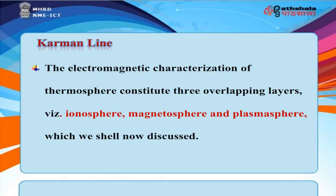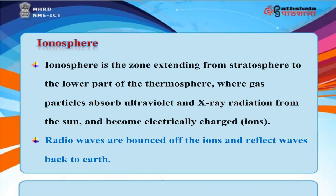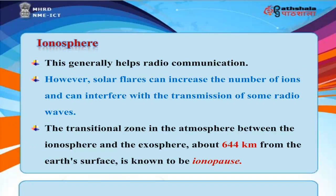The electromagnetic characterization of the thermosphere constitutes three overlapping layers: the ionosphere, magnetosphere, and plasmasphere. The ionosphere extends from the stratosphere to the lower part of the thermosphere, where gas particles absorb ultraviolet and X-ray radiation from the Sun and become electrically charged ions. Radio waves are bounced off the ions and reflected back to Earth, which generally helps radio communication. However, solar flares can increase the number of ions and interfere with transmission of some radio waves. The transitional zone between the ionosphere and the exosphere, about 644 kilometers from Earth's surface, is known as the ionopause.